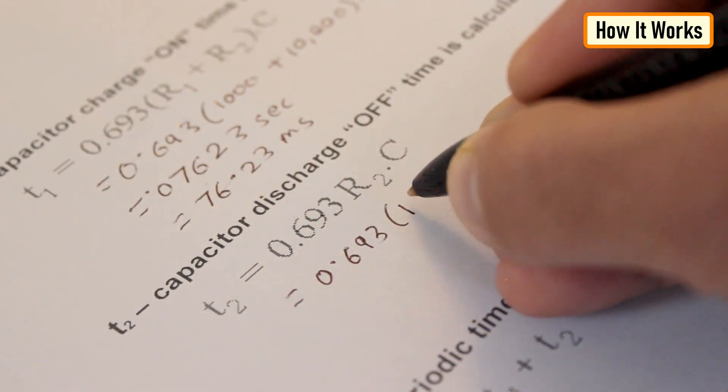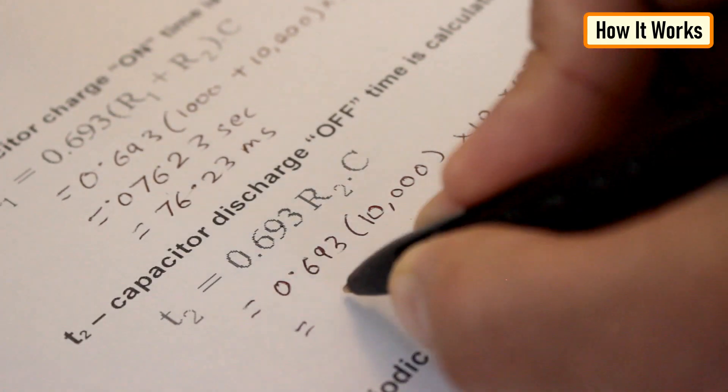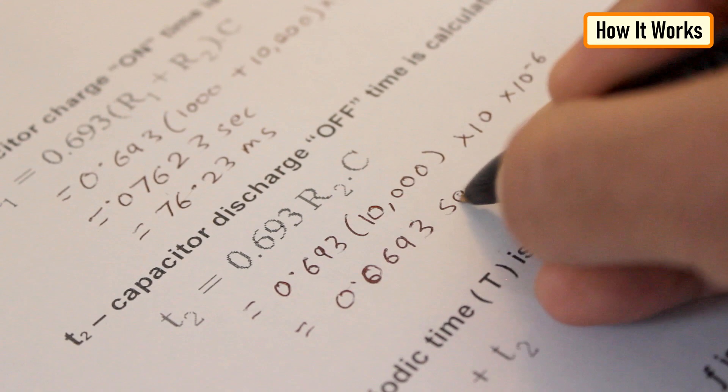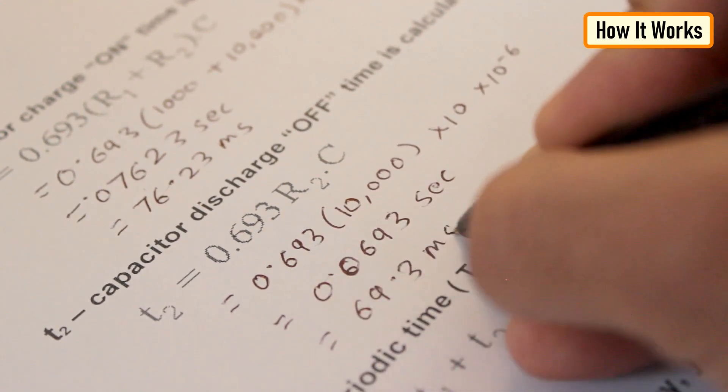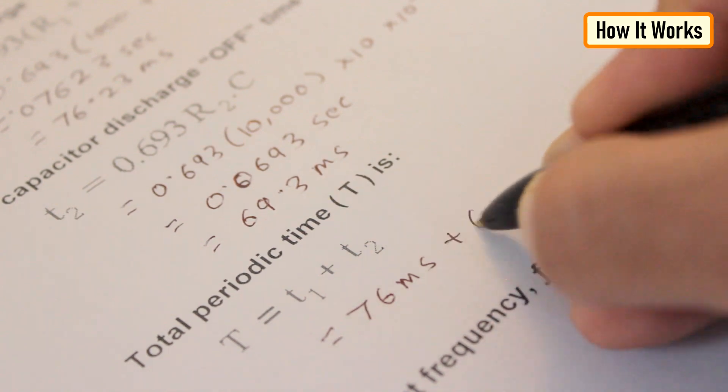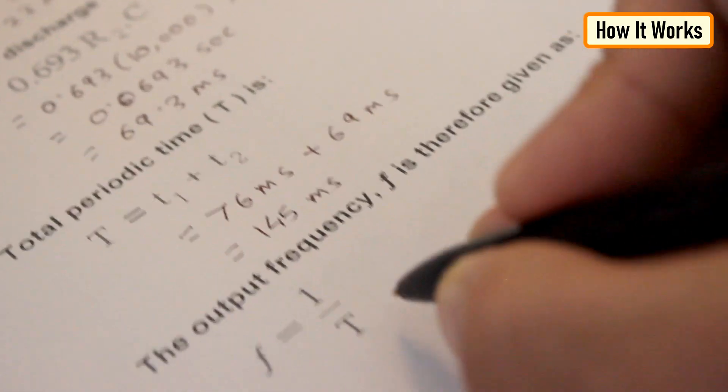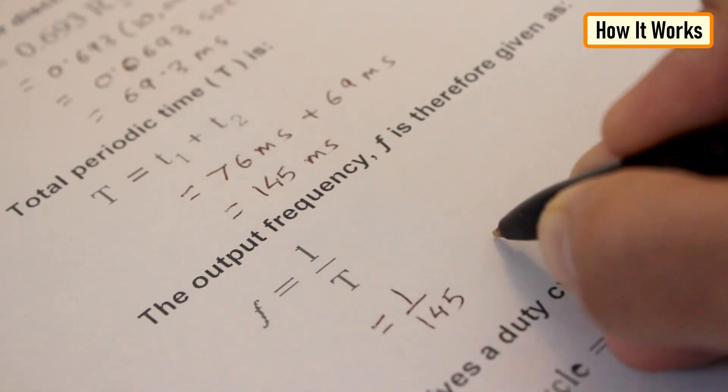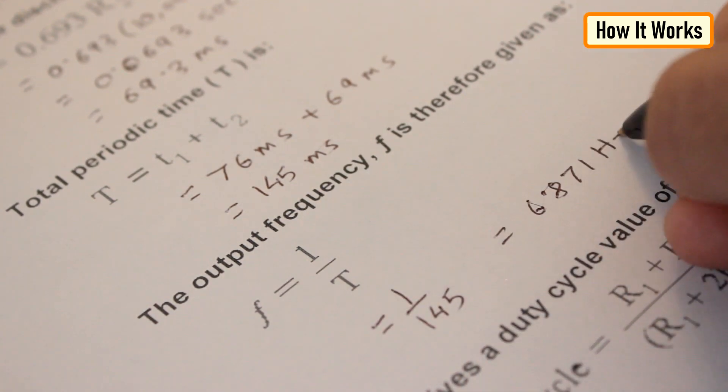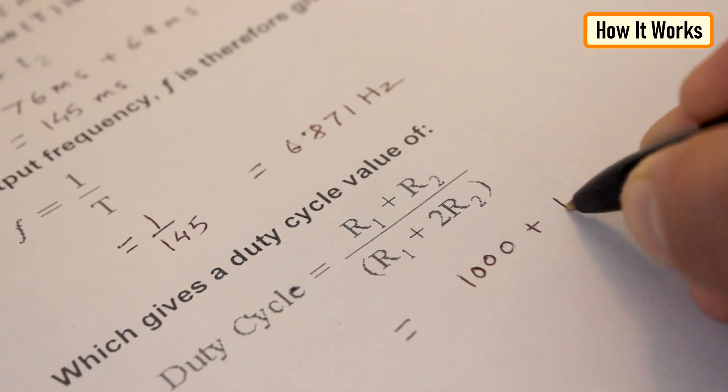Now, for capacitor discharge off time or T2, we need to multiply 0.693 to R2 and C3 which then gives a value of 69.3 milliseconds. Next, the total periodic time T is equal to T1 plus T2 which comes out to be 145.23 milliseconds. The output frequency F is therefore 6.871 hertz which gives a duty cycle value of 52.38 percent.